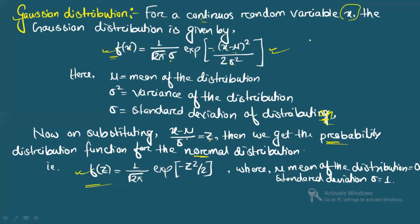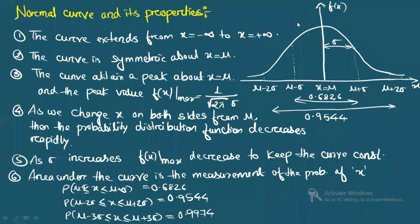Now we will see the normal curve and its properties — it's not tough, just note down the points. When you plot the probability distribution function f(x) against the random variable x, you get the Gaussian distribution curve. The first property is that this curve extends from x = −∞ to x = +∞.